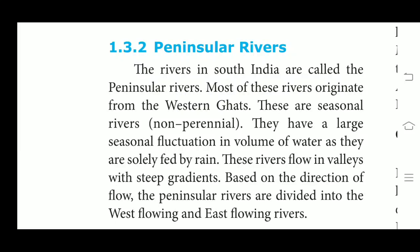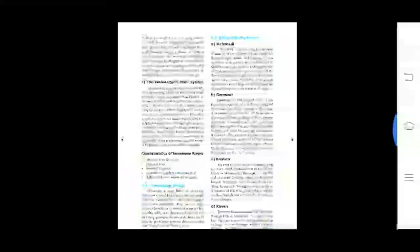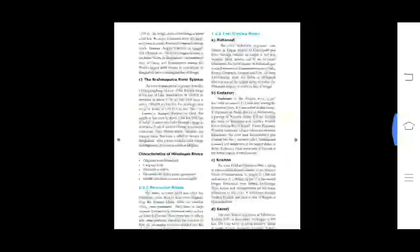During the dry season, even the large rivers have reduced flow of water in their channels. Based on the direction of flow, the Peninsular rivers are divided into west flowing and east flowing rivers. Now we see about the east flowing rivers.